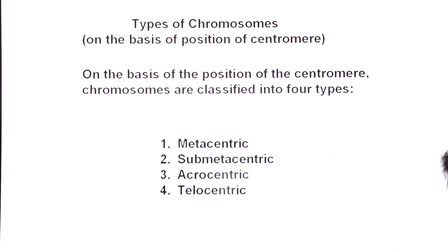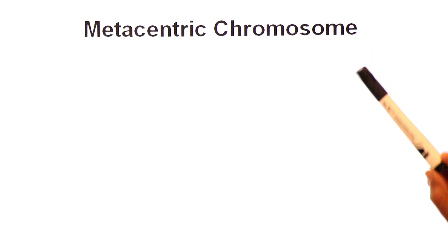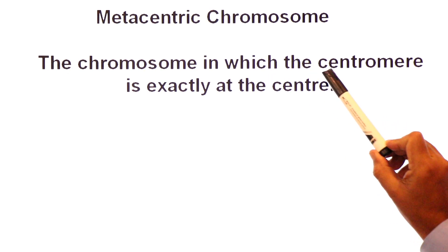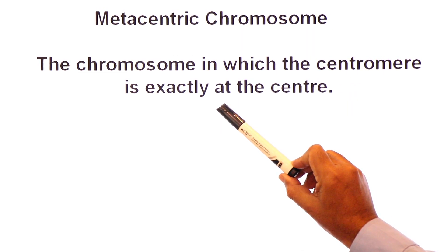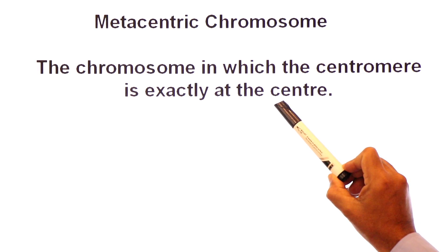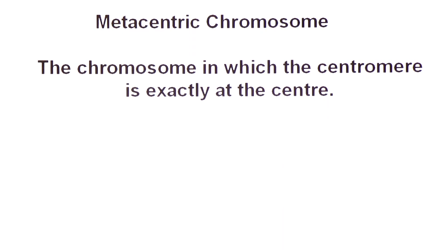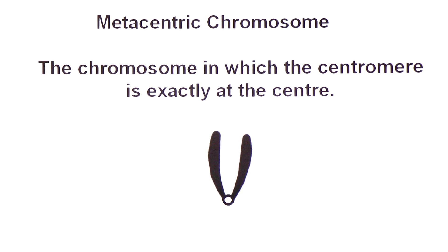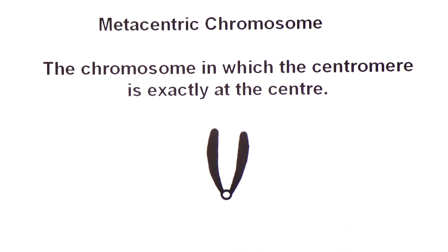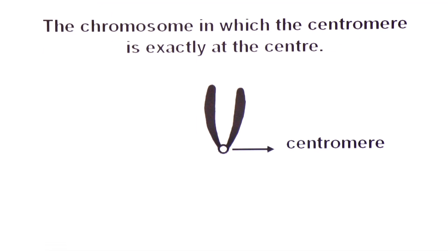Let's start with the metacentric chromosome. The metacentric chromosome is defined as the chromosome in which the centromere is exactly at the center — exactly in the middle.